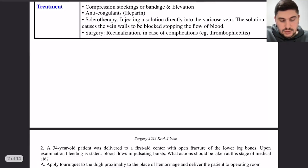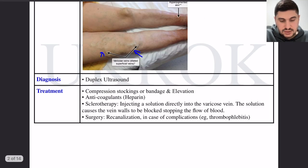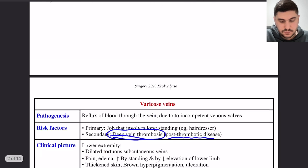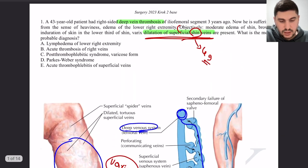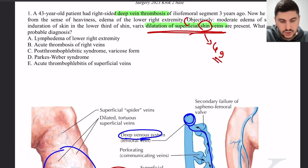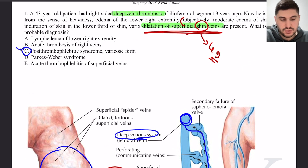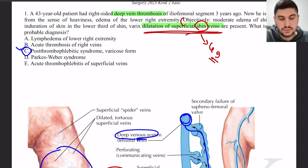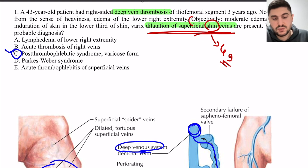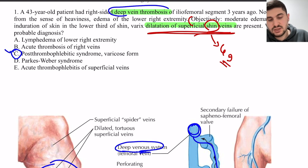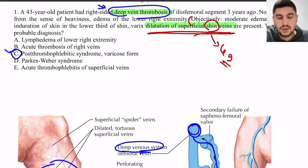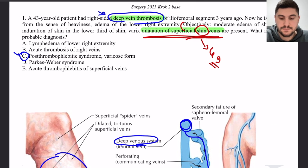So the answer to this question is post-thrombotic (thrombophlebitic) syndrome with varicose veins, because the patient had deep vein thrombosis three years ago.